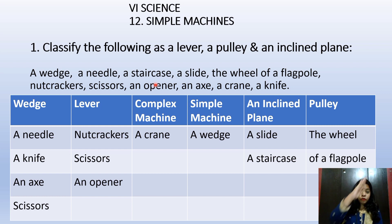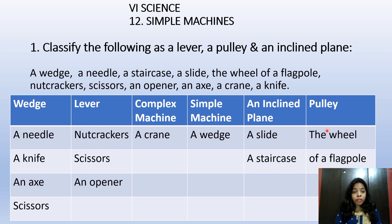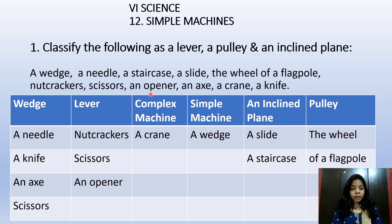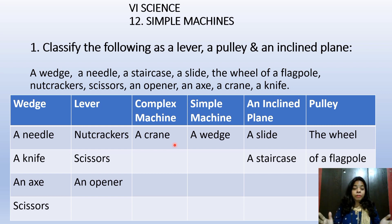A staircase is a sloping surface, so we will place it under inclined plane. A slide is an example of an inclined plane because it is sloping. The wheel of a flagpole is an example of a pulley. Nutcrackers are an example of a lever. Scissors can be placed under lever and also under wedge because scissors have a sharp edge. A bottle opener is an example of a lever. An axe is an example of a wedge — a clear example. A crane is an example of a complex machine because it is made of many different parts joined together. A knife has a sharp edge, so it is a wedge — because anything which is sharp is a wedge.